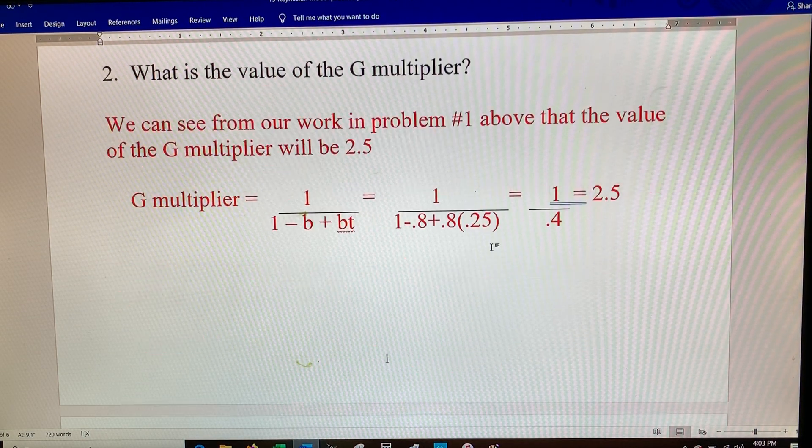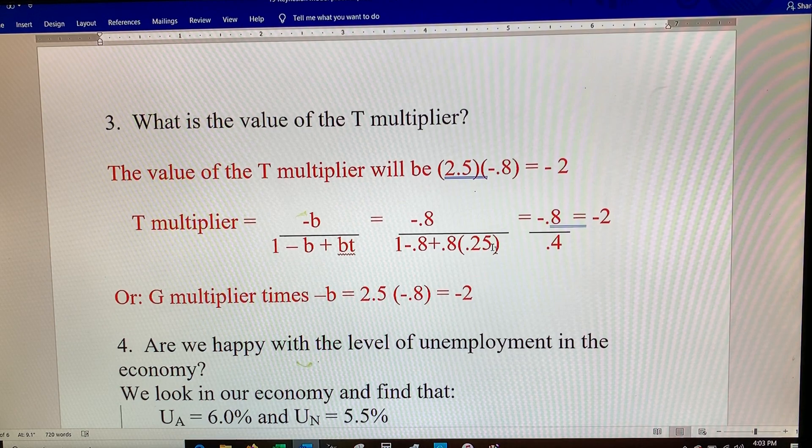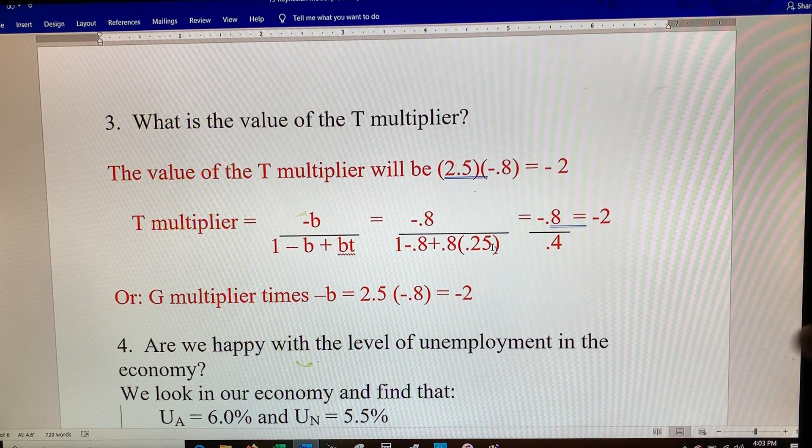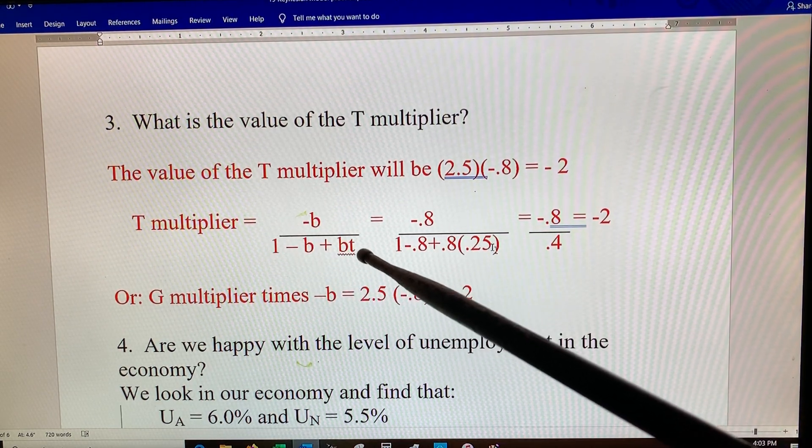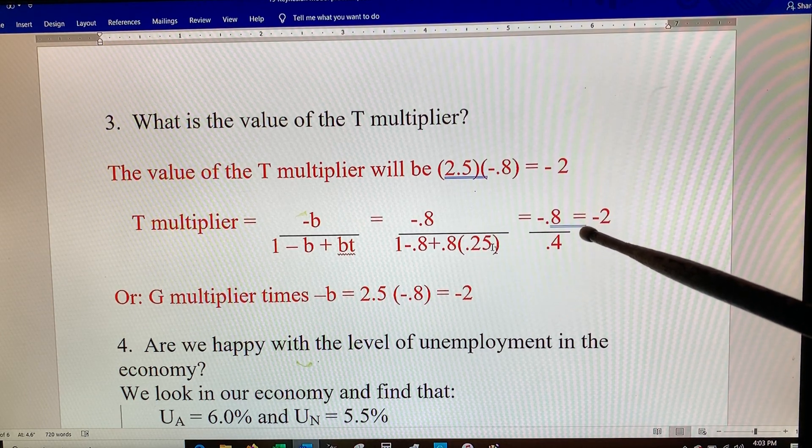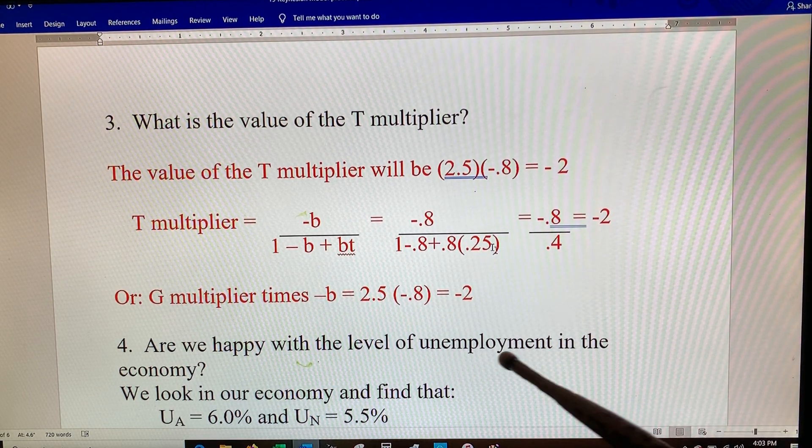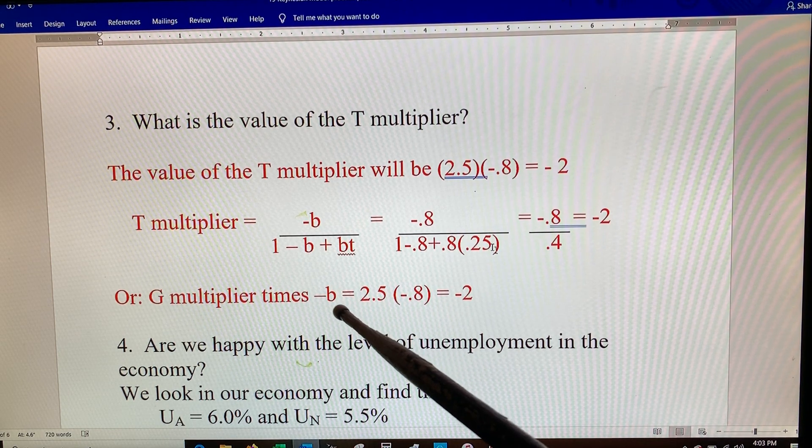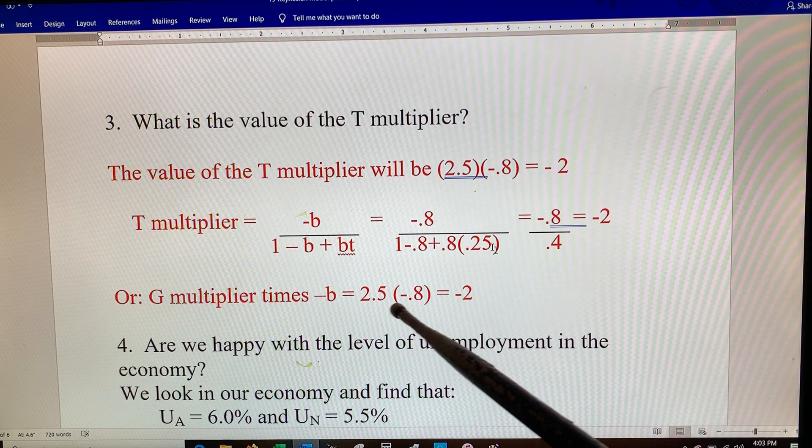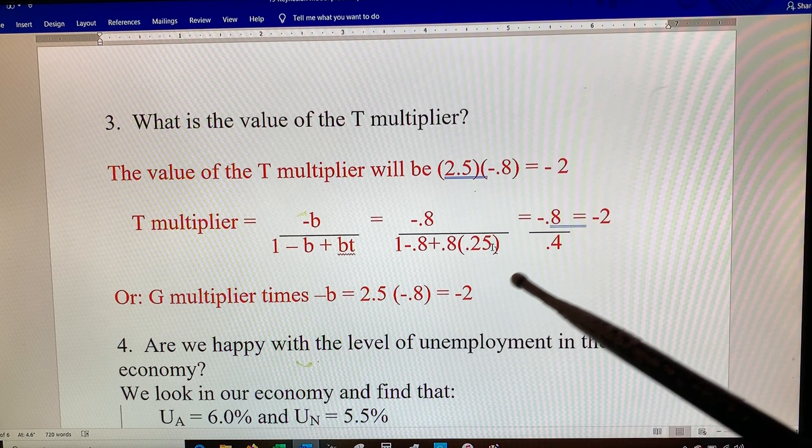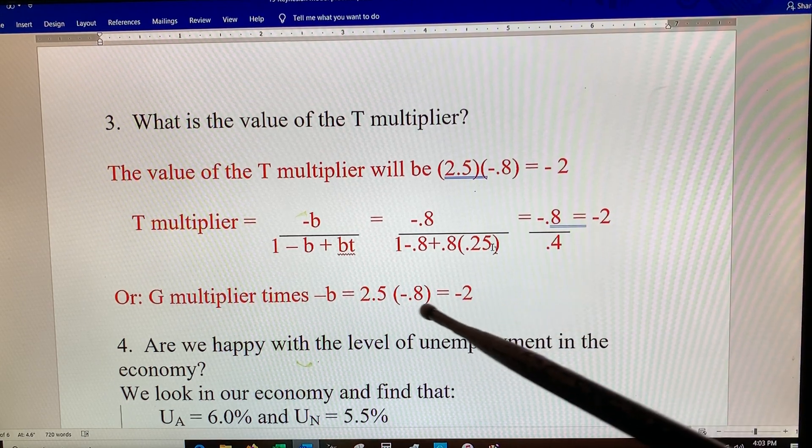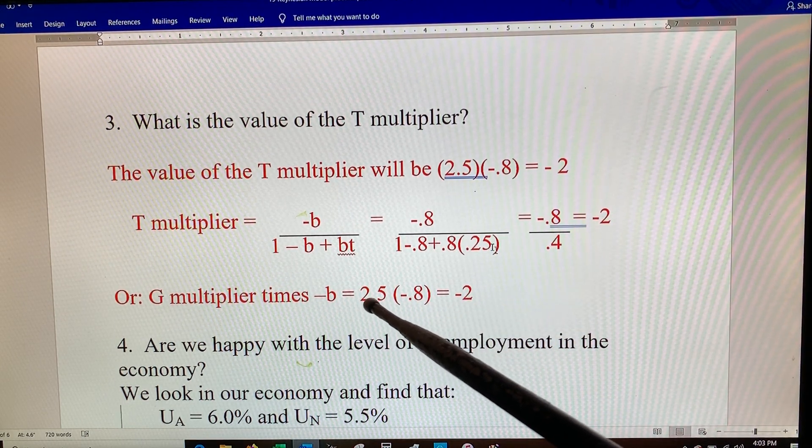And then the T multiplier. If you took all the values here and plug them in you would get this. Another way you can get the T multiplier is take the G multiplier and multiply it by minus B, and it gives you minus 2. The problem with this is if you make a mistake finding the G multiplier, then your T multiplier will also be mistaken.